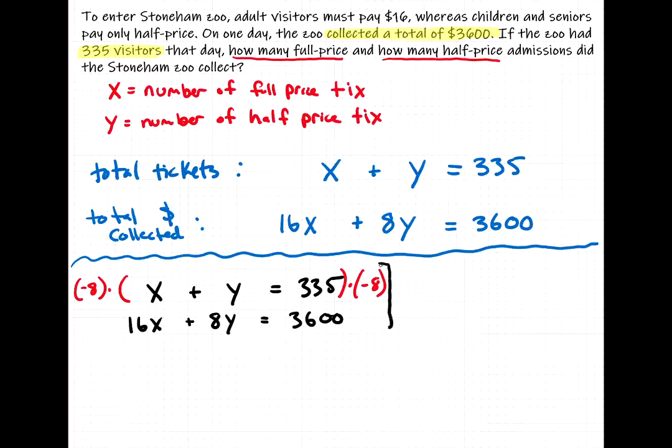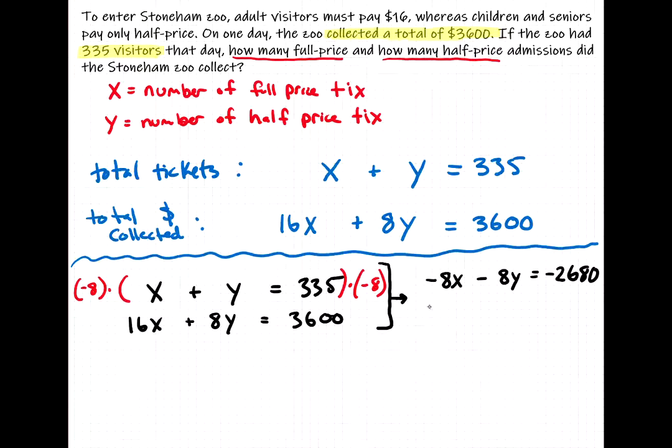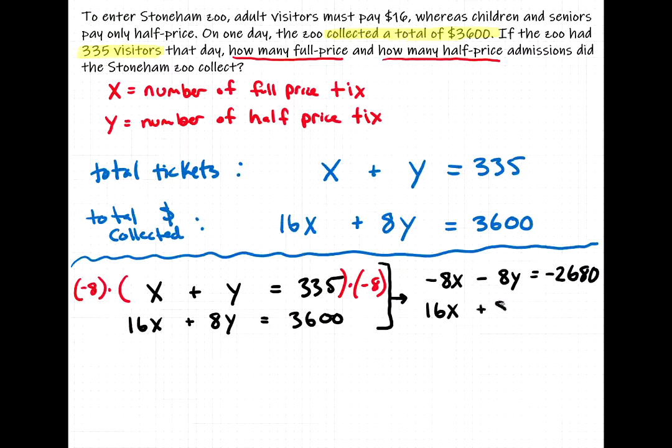So that first equation, times negative 8. So this system of equations, once we multiply both sides by negative 8, becomes negative 8x minus 8y is equal to, well, 335 times a negative 8. And if you plug that into the calculator, you will get negative 2680. Second equation stays what it was. So, 16x plus 8y is equal to 3600. And the reason we did this, using the times negative 8, is because now, when we add the two equations together, the negative 8x plus 16x will give us 8x. And the negative 8y plus positive 8y, that gives you 0. So, they cancel out.